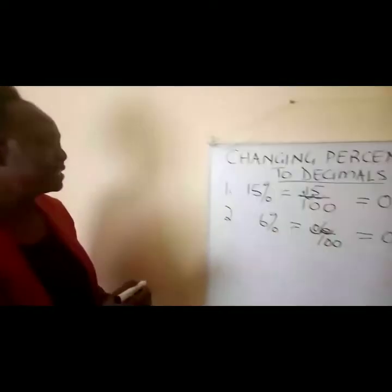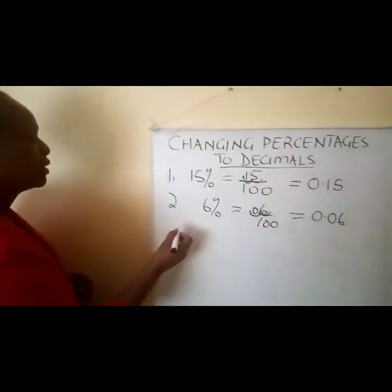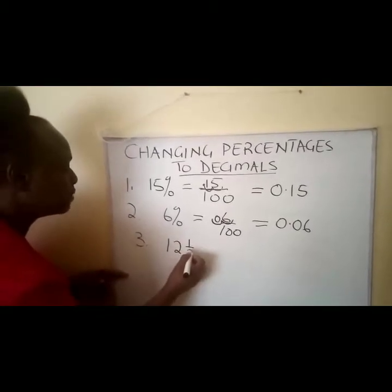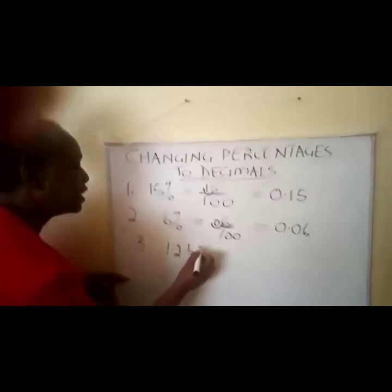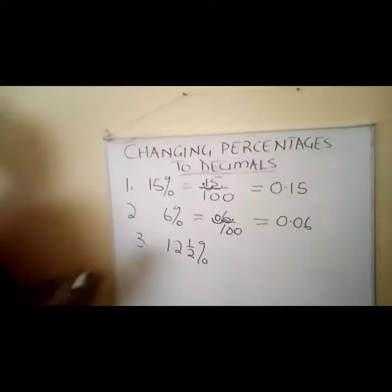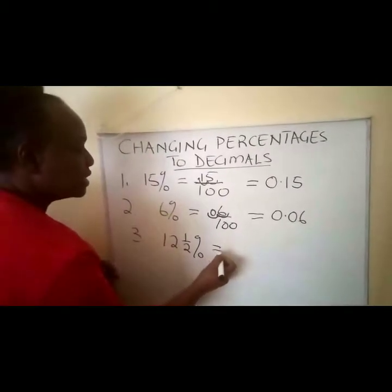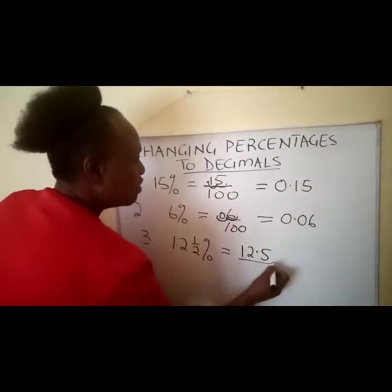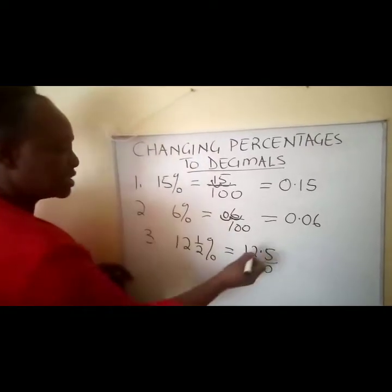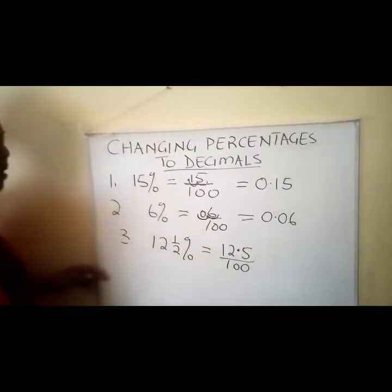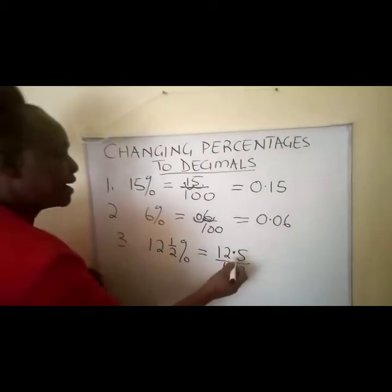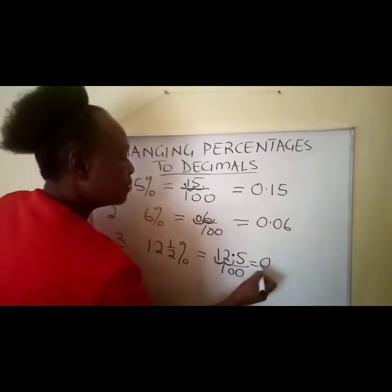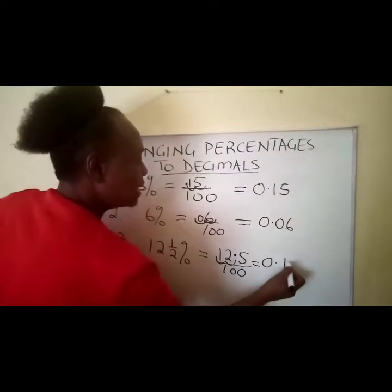We might also have percentages expressed as mixed numbers, like 12 and a half percent. We express it as 12.5 over 100. This time we already have a decimal, but still dividing by 100 we move one, two places. So this will become 0.125.